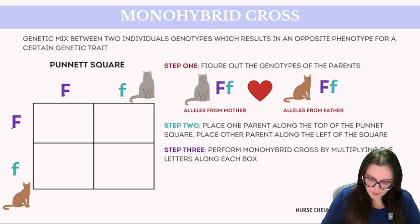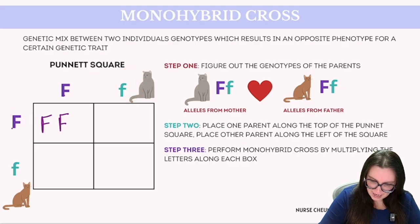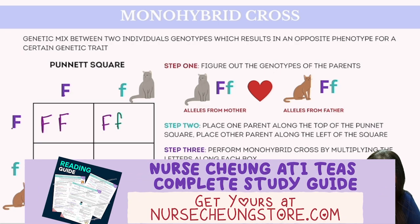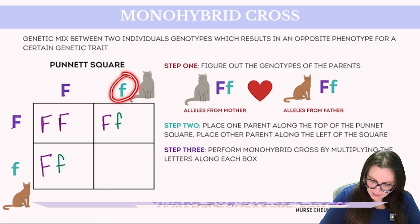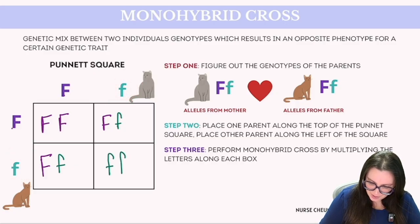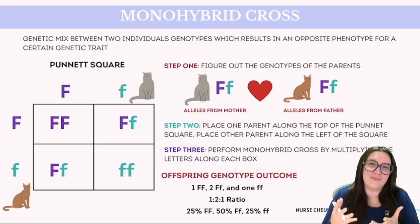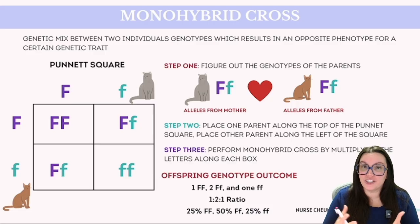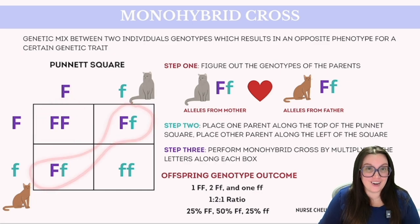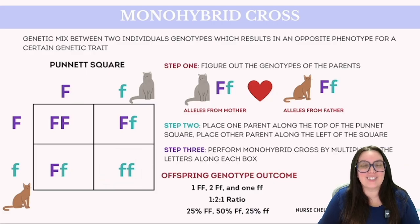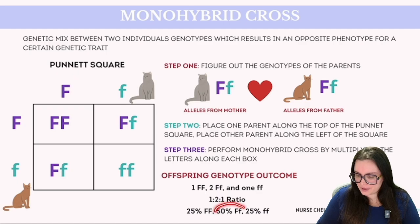Our first example: capital F multiplied by capital F gives us capital F capital F. Next, capital F multiplied by lowercase f gives us capital F lowercase f. Then lowercase f multiplied by capital F gives us capital F lowercase f. And lastly, lowercase f multiplied by lowercase f gives us lowercase f lowercase f. The resulting squares reveal the potential genotypes of the offspring: one cat homozygous dominant, two cats heterozygous, and one cat homozygous recessive. This can be expressed as a 1:2:1 ratio, or 25% FF, 50% Ff, and 25% ff.